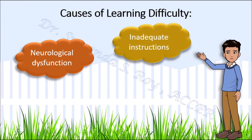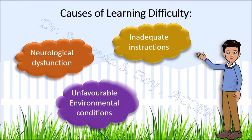Inadequate instructions can also lead to learning difficulties. If the teacher goes too fast or is not clear about the instructions, then doubts remain unsolved in children like Ishan. This results in poor foundation, so they may be promoted to higher classes without having a strong foundation to learn new things. Some studies also show that poor environmental conditions like poor diet and exposure to pollution may contribute to learning difficulties.